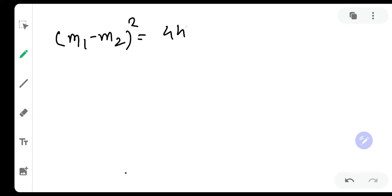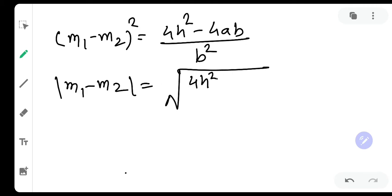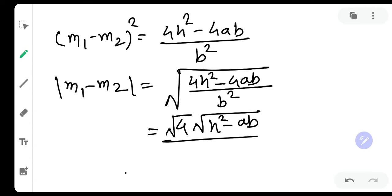(M1 - M2)² = (4H² - 4AB)/B². Let us take square root. So M1 - M2 would be equal to √[(4H² - 4AB)/B²]. If I take 4 common inside the root, I have √[(H² - AB)/B²], which is nothing but 2√(H² - AB)/B.